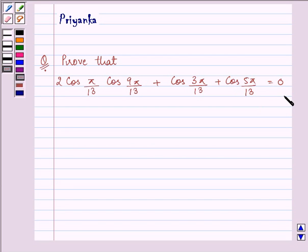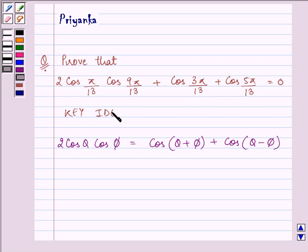Now, in order to prove this, first of all we should be well versed with an identity which says that 2 cos θ cos φ is equal to cos(θ + φ) plus cos(θ - φ). We will be making use of this identity and hence it becomes a key idea before starting off with the proof.